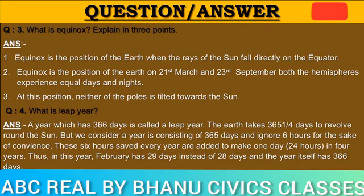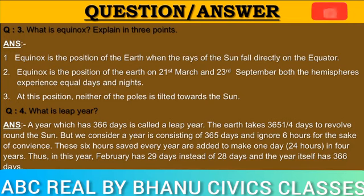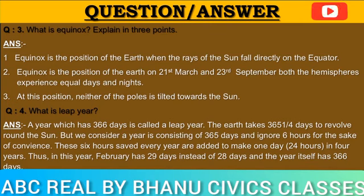Question number four: What is a leap year? Answer: A year which has 366 days is called a leap year. The earth takes 365 and one-fourth days to revolve around the sun, but we consider a year as consisting of 365 days and ignore six hours for convenience. These six hours saved every year are added to make one full day over four years. Thus, in that year, February has 29 days instead of 28, and the year itself has 366 days.